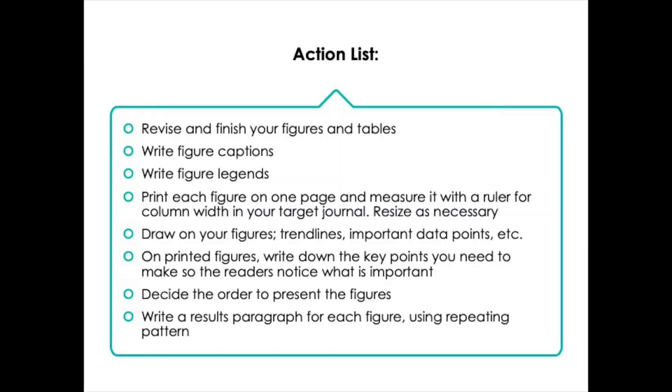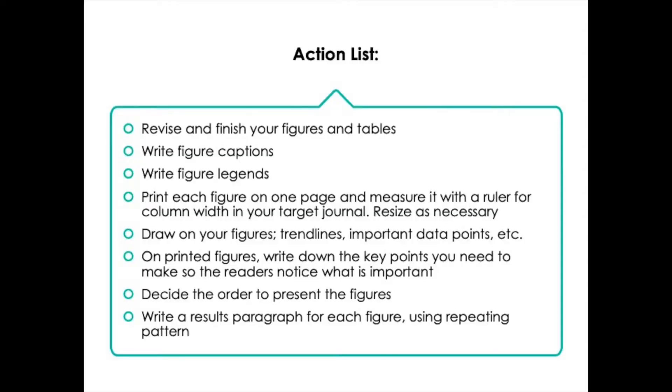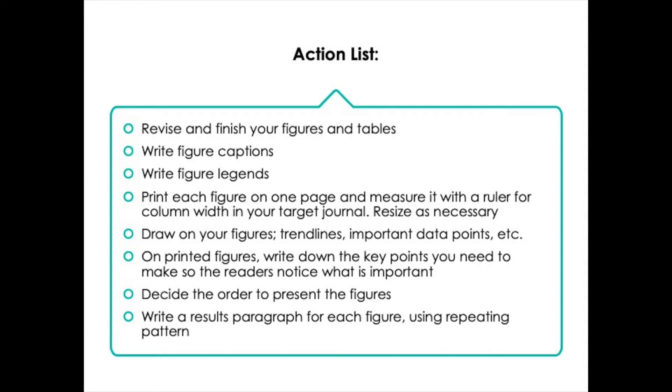Next, draw on your figures — draw trend lines, circle important data points, and figure out what you are seeing that allows you to interpret that result. Think about what you want to help your readers see in that figure and mark it up. Then on the printed figures, write down the key points you need to make — you might have one key point or four or five. Next, decide the order you're going to present the figures, and now you're ready to write a results paragraph for each figure using the repeating pattern. Once you have all of those results paragraphs written, you've got a full first draft of the results section.